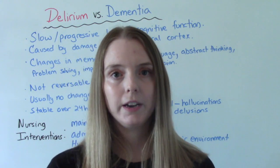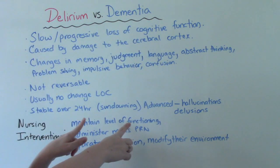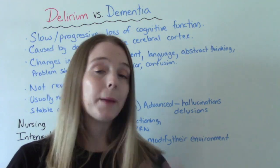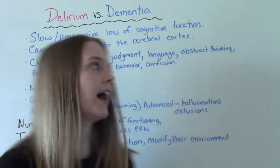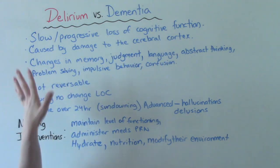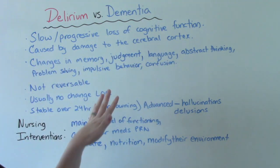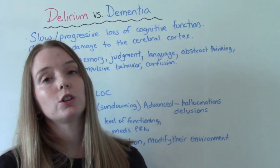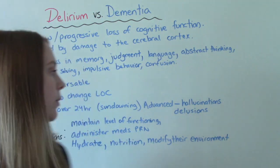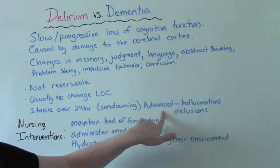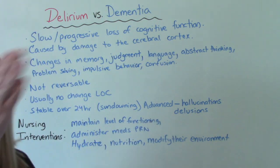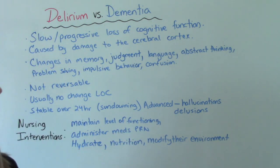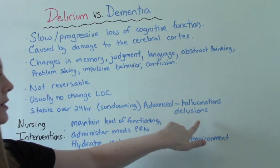One exception is the concept of sundowning. People who have dementia are not as affected during the day, but at nighttime it gets progressively worse and more challenging for them — that's sundowning. Additionally, people who have advanced dementia can experience things like hallucinations and delusions.